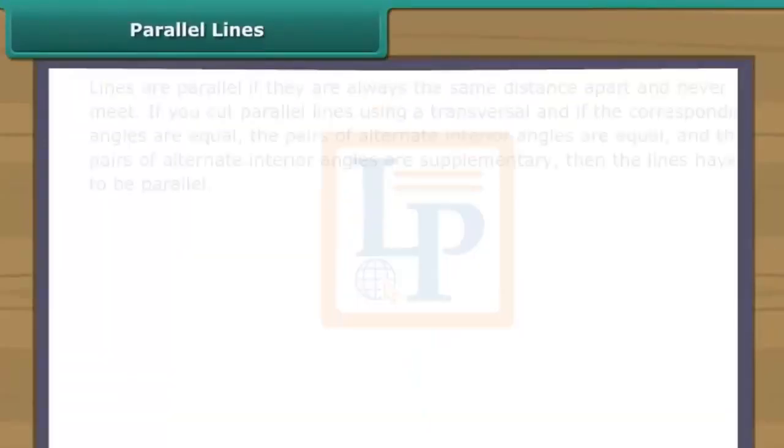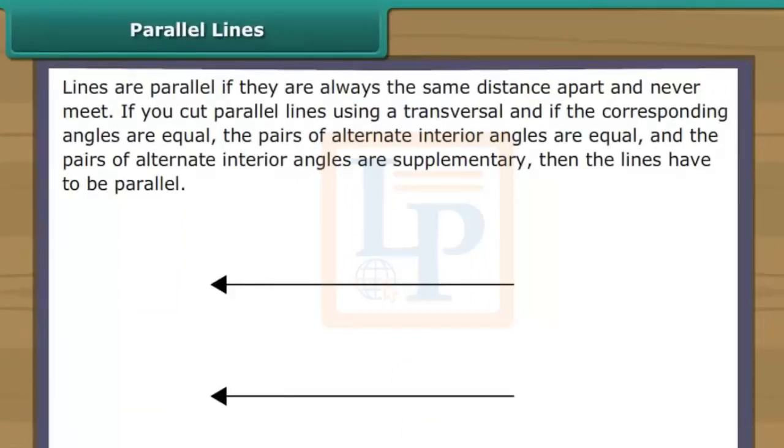Parallel lines. Lines are parallel if they are always the same distance apart and never meet. You can also check if lines are parallel by cutting the lines using a transversal. If the corresponding angles are equal, the pairs of alternate interior angles are equal and the pairs of alternate interior angles are supplementary, then the lines have to be parallel.